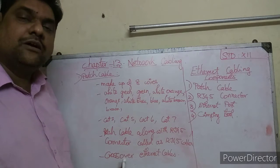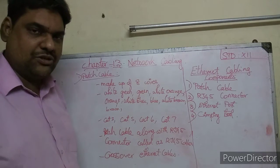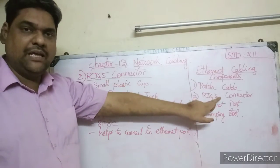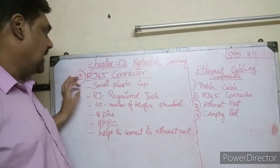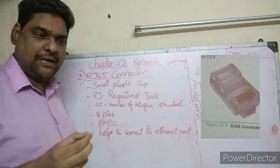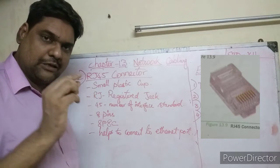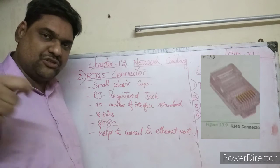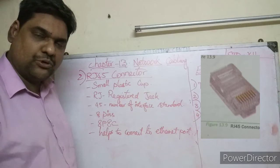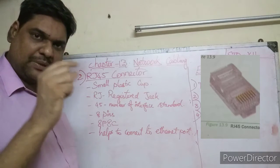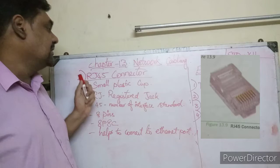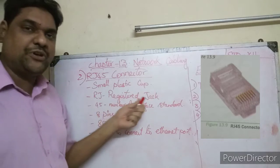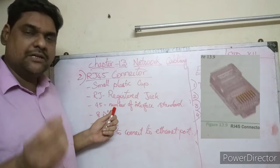We use the crossover ethernet cable in specific situations. Now let us see the next component of ethernet cabling - that is the RJ45 connector. When it is a plastic transparent cup-like connector connecting to the ethernet port, that plastic connector is the RJ45 connector. RJ means registered jack.